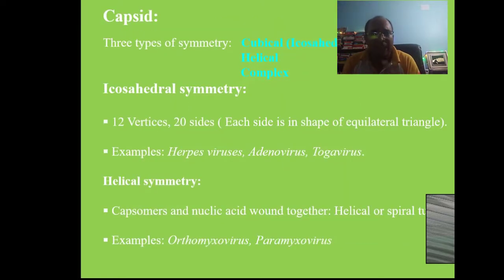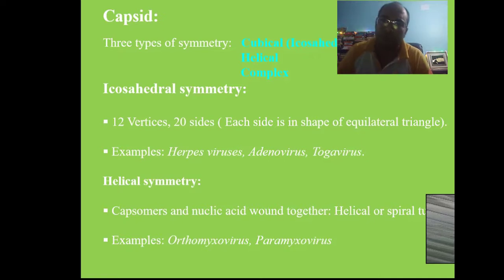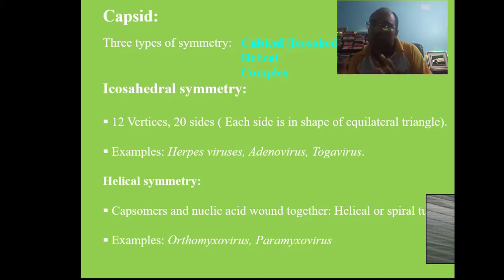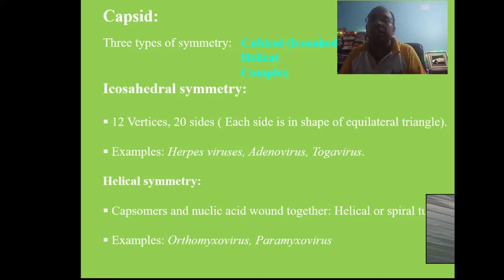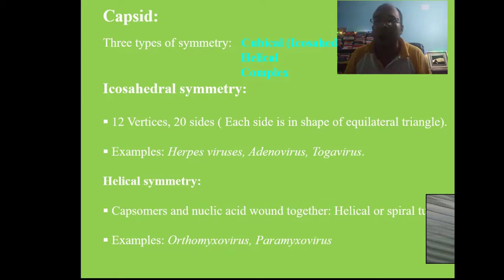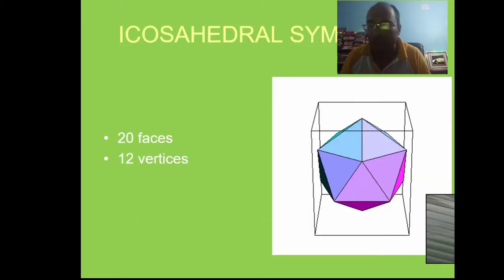Virus contains either DNA or RNA, covered by a protein coat called the capsid. The capsid has three types of symmetry: cubical (icosahedral) symmetry, helical symmetry, and complex symmetry. In icosahedral symmetry, the capsid contains 12 vertices and 20 faces — examples include herpesviruses, adenoviruses, and reoviruses. In helical symmetry, capsomeres and nucleic acids are wound together forming a helical or spiral tube — examples include orthomyxoviruses and paramyxoviruses.